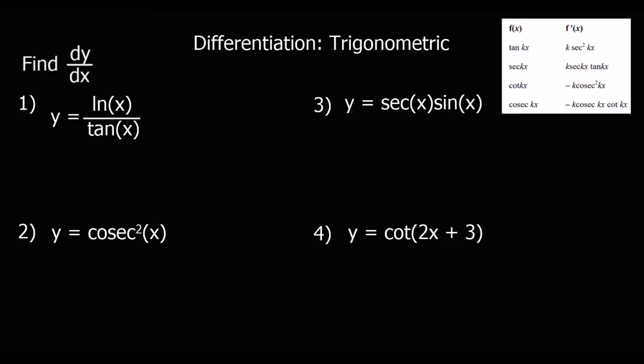Let's look at some examples of questions using these trigonometric functions. The first question: we've got y equals ln x over tan x. We have one function divided by another function, so that's going to be the quotient rule.